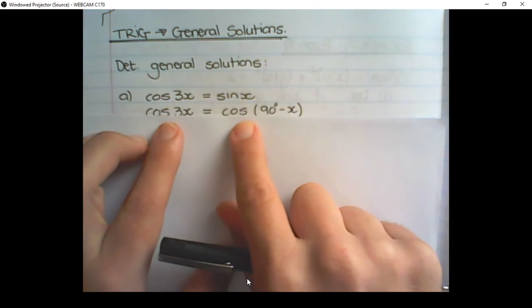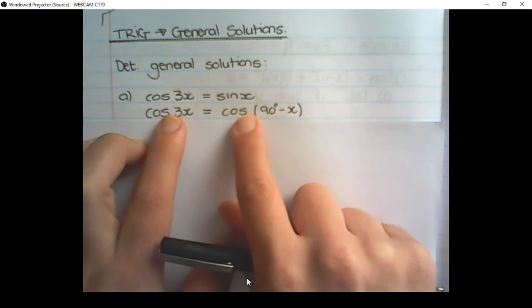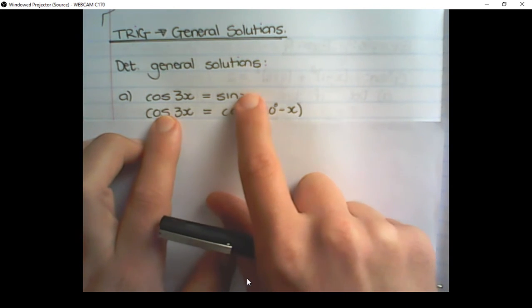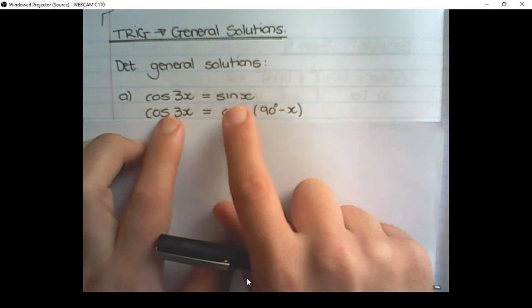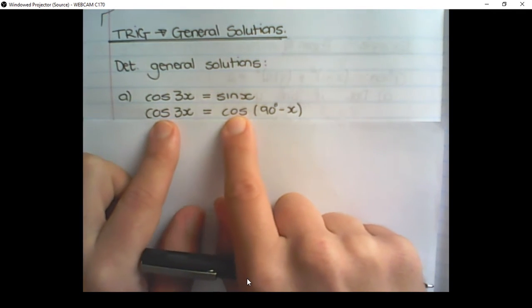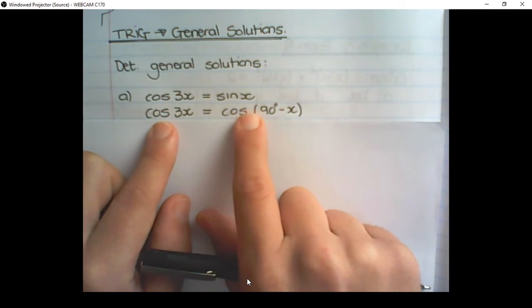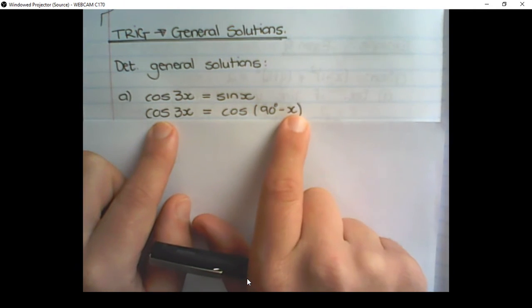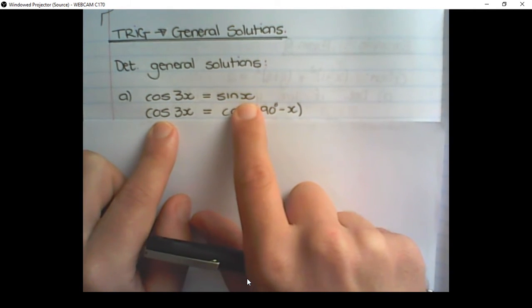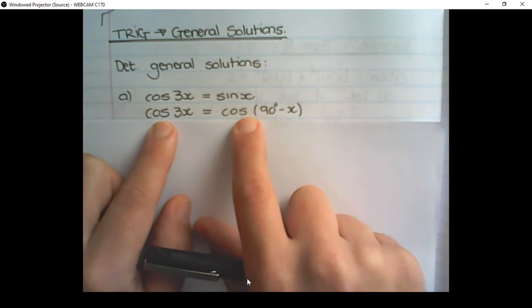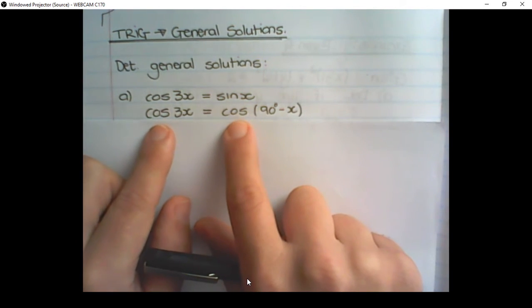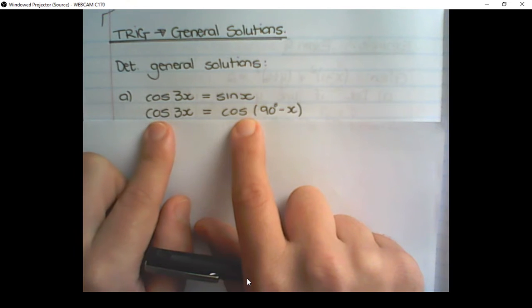What we want to do is change either the one on the left or the one on the right to the other one. For example, we used the reduction formula of cos(90° − x), which is equal to sin x, and we changed it so that both sides have a cos.